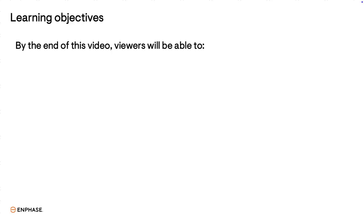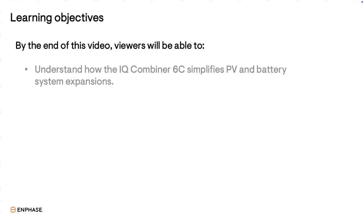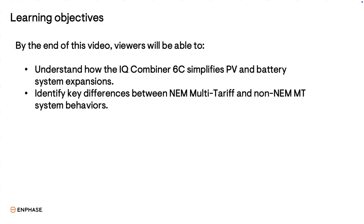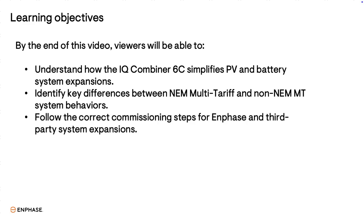By the end of this video, viewers will be able to understand how the IQ Combiner 6C simplifies PV and battery system expansions, identify key differences between NEM multi-tariff and non-NEM multi-tariff system behaviors, and follow the correct commissioning steps for Enphase and third-party system expansions.